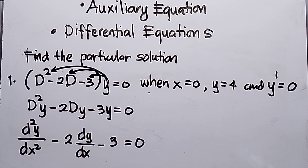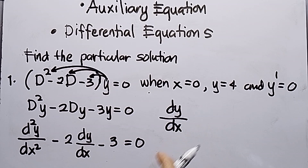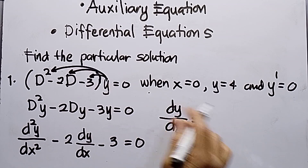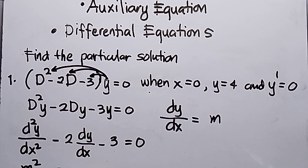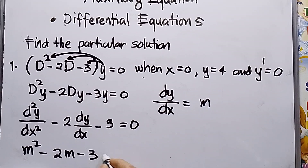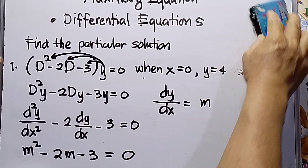In the auxiliary equation, we relate dy/dx to m. So d²y/dx² corresponds to m². This gives us m squared minus 2m minus 3 equals zero. Now I need to factor out this trinomial.